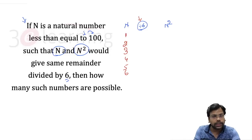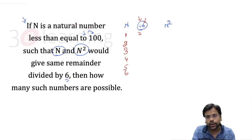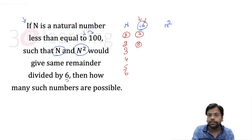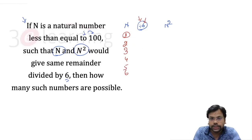These six numbers give different remainders when divided by 6. You might ask why we are not working on 7 or beyond — because 7 and 1 are essentially the same: 7 divided by 6 gives remainder 1, 8 divided by 6 gives remainder 2. So we have only six sets of different remainders.